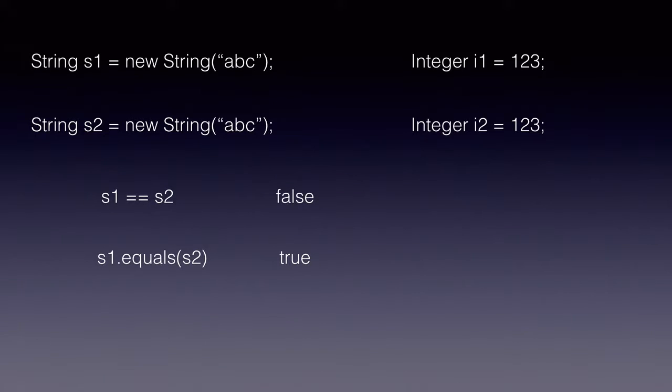Similarly, for the wrapper types, int i1 equal to 1, 2, 3, integer i2 is equal to 1, 2, 3. If we do a i1 double equals i2, it will return a false, but if we do i1 dot equals i2, it will return a true.